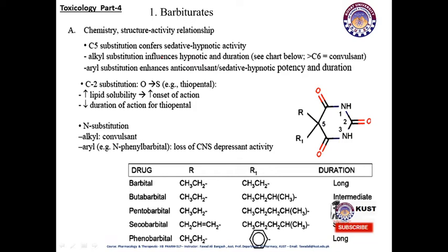Barbiturate chemistry and structure-activity relationships: C5 substitution accounts for sedative-hypnotic activity. Alkyl substitution influences hypnosis and duration. C2 substitution — as in thiopental — is an ultra-short-acting barbiturate; it increases lipid solubility, increases onset, and decreases duration of action. S-substitution creates alkyl convulsant properties. N-substitution with alkyl increases convulsant action; N-phenyl substitution results in loss of CNS depressant activity.